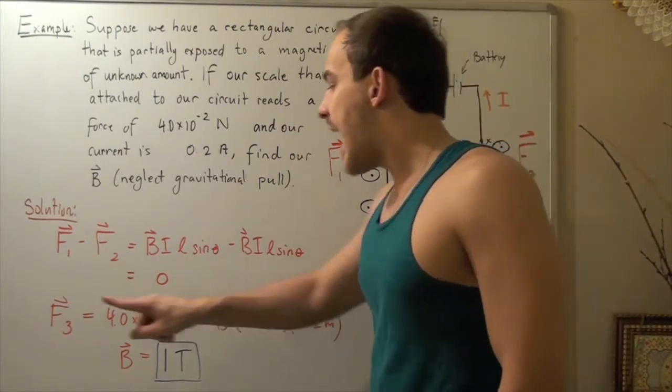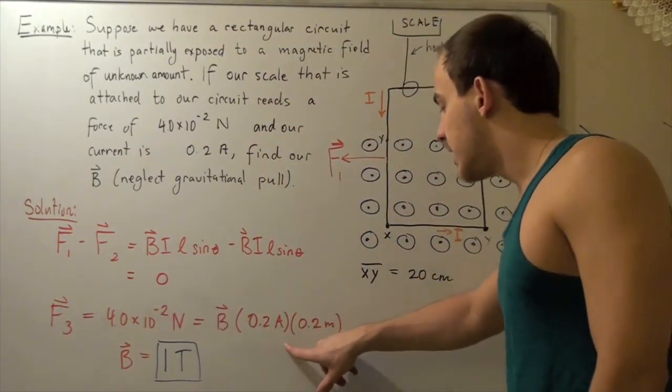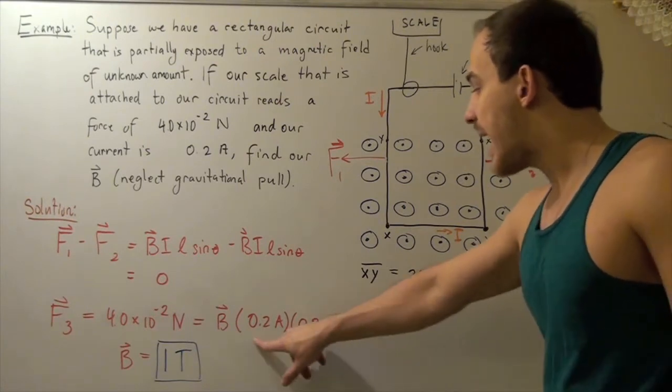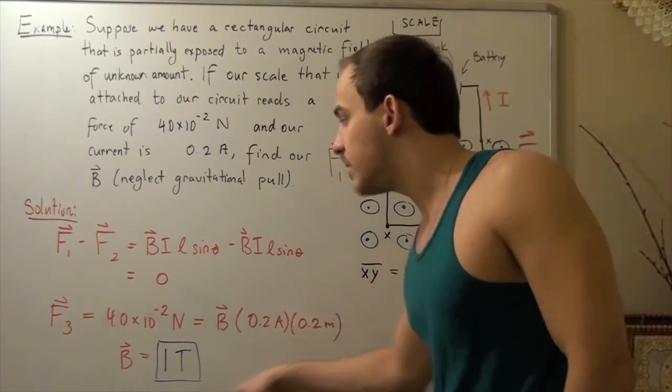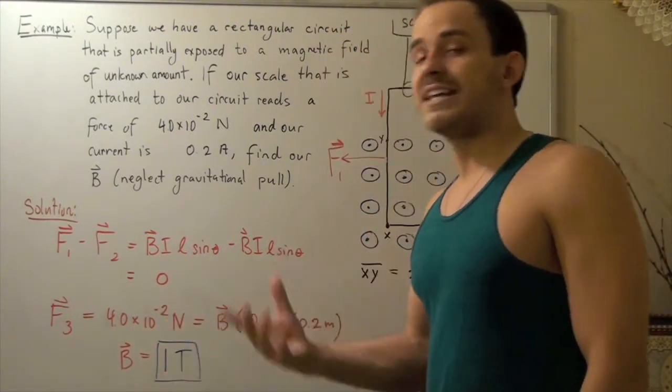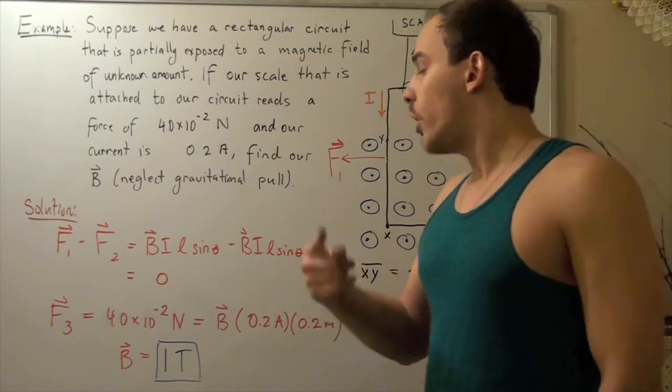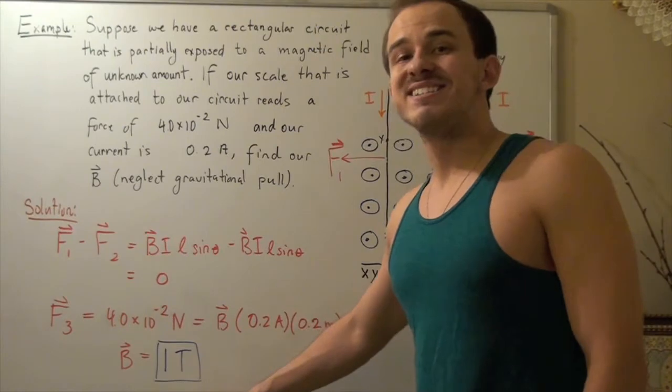And so, we simply plug in our force, we plug in our length, and we plug in our amps. We multiply these guys out, and we bring them over and divide our force, and we get our B, or our magnetic field is simply 0.04 divided by 0.04 gives us 1 tesla.